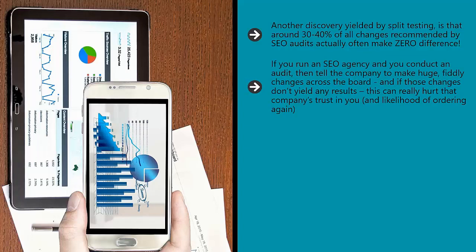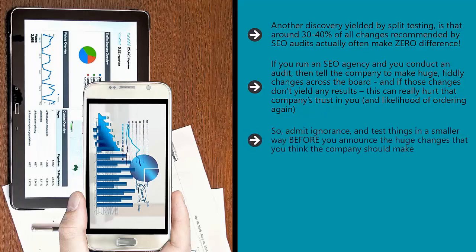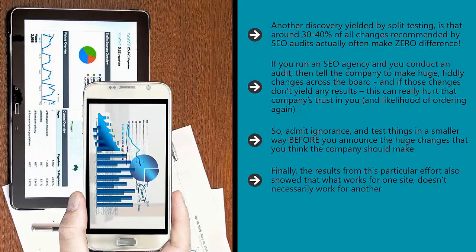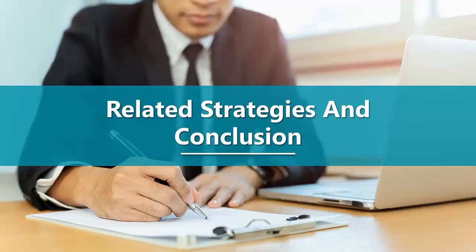If you run an SEO agency and you conduct an audit, then tell the company to make huge, fiddly changes across the board, and if those changes don't yield any results, this can really hurt that company's trust in you and likelihood of ordering again. So, admit ignorance and test things in a smaller way before you announce the huge changes that you think the company should make. Finally, the results from this particular effort also showed that what works for one site doesn't necessarily work for another — this could be impacted by everything from industry to competition to writing style. But it also means that running a split test once and forgetting all about it may not be enough; you need to test your strategy every time before you roll it out across the board.